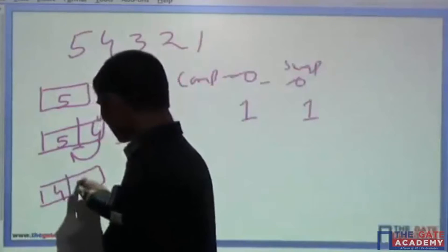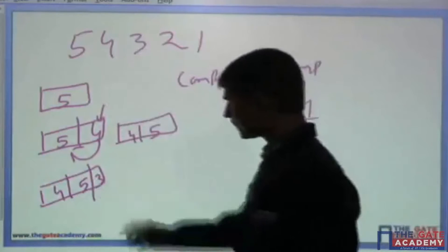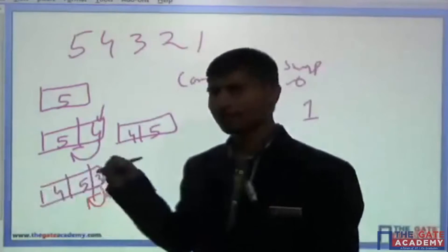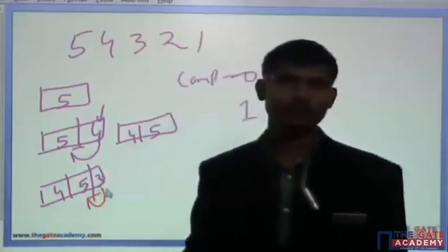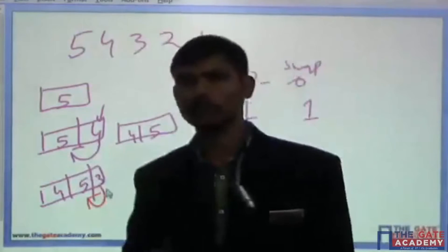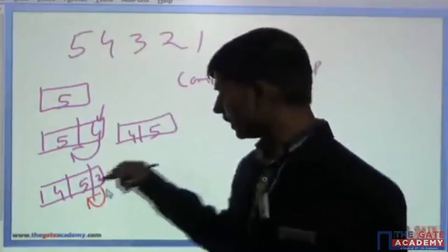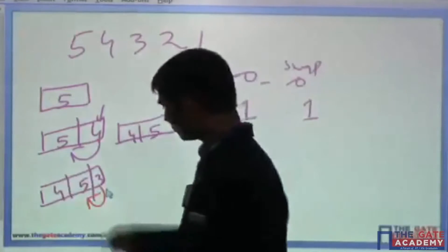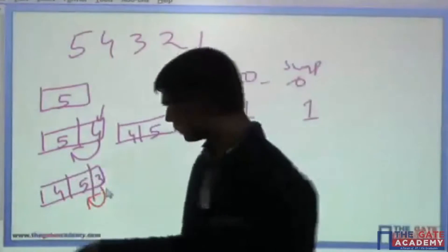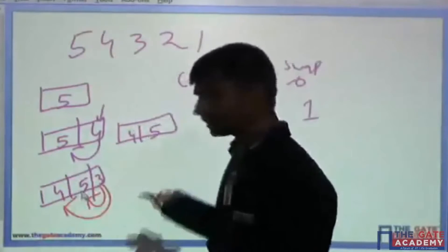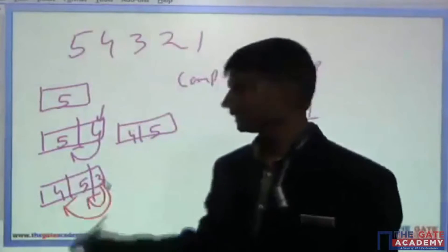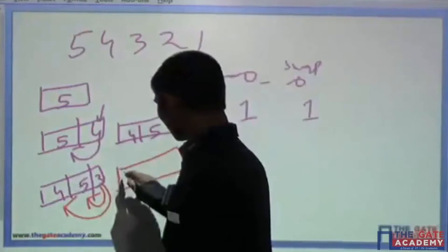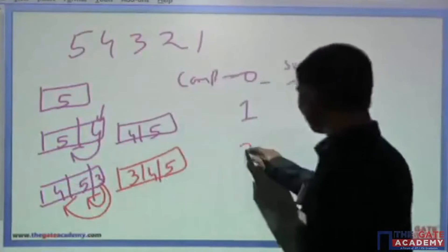When element 3 comes next, it asks 5: are you smaller than me? 5 says no. Then 3 asks 4: are you smaller? 4 also says no. You can use linear search or binary search to find the correct position — binary search can reduce comparisons but not the number of swaps. So 3 gets placed correctly as 3, 4, 5 with two comparisons and two swaps.